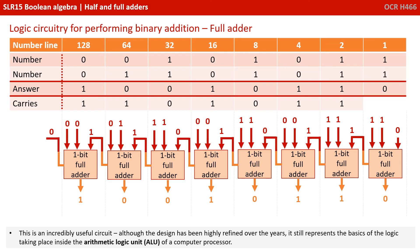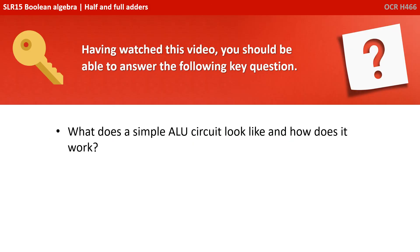This is an incredibly useful circuit. Although the designs have been highly refined over the years, it still represents the basics of the logic that actually takes place inside the arithmetic logic unit of a computer processor. Here we can see how a string of 1-bit full adders can be used to perform the original binary calculation we presented at the start of this video. Having watched this video, you should be able to answer the following key question: what does a simple ALU circuit look like and how does it actually work?